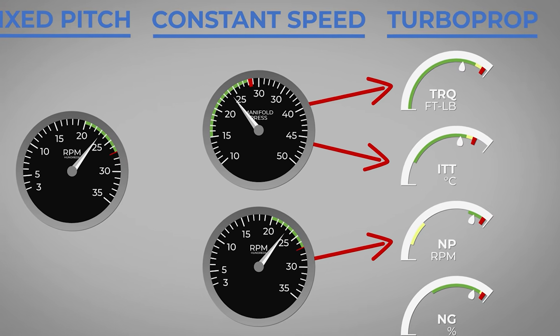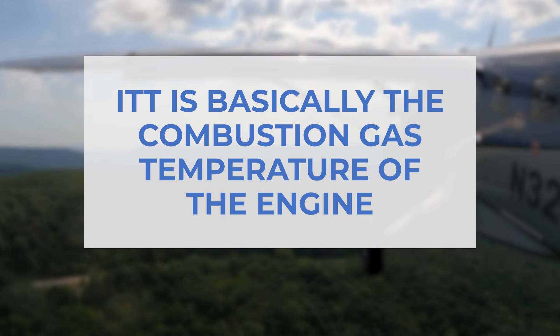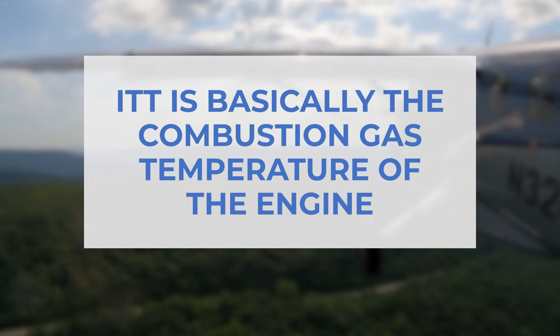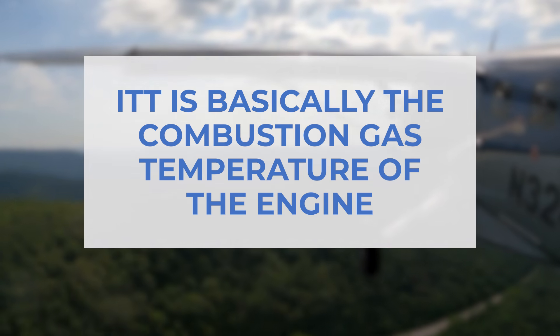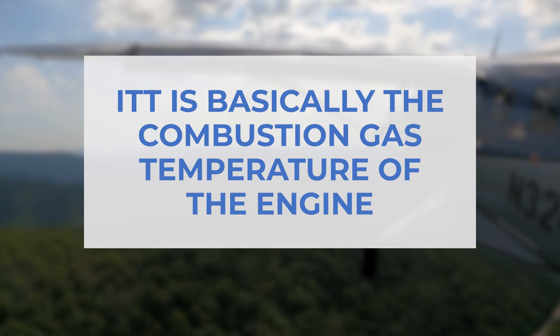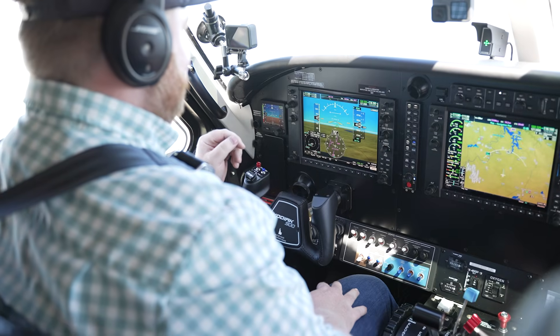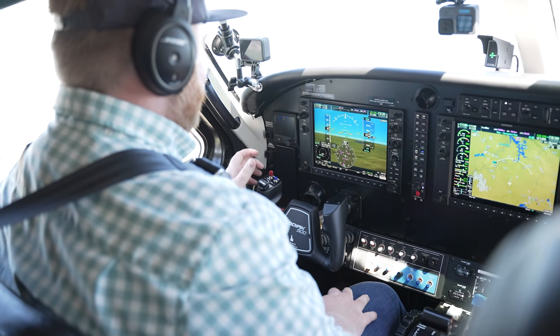Next is ITT, which is inter-turbine temperature. It's basically the combustion gas temperature of the engine, or how hot is the engine running? It's not really your primary power indication, but it's something you're referencing for power settings to make sure you don't over-temp the engine.